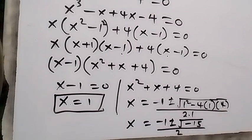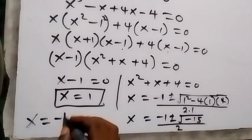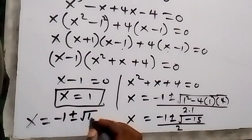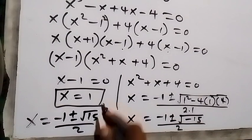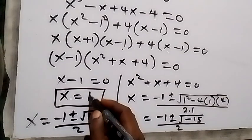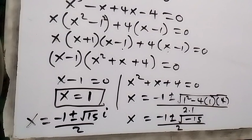Since √(−15) = i√15, the complex solutions are x = (−1 ± i√15) / 2. Therefore, the expression can be reduced to 1, or (−1 + i√15) / 2, or (−1 − i√15) / 2. Thank you for watching — don't forget to subscribe to this channel for more videos.